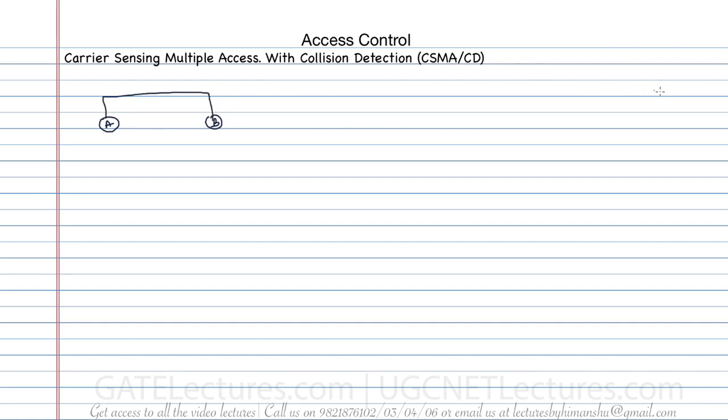Let's look at the backoff algorithm related to CSMA/CD. For example, if there are two stations A and B, they are connected. If station A wants to send some data and station B also wanted to send some data, there is a collision. After collision, the collision signal is sent to both A and B. The backoff algorithm gives you the waiting time for a station to wait before it starts re-transmitting the data.